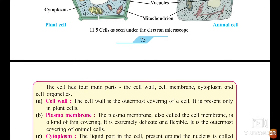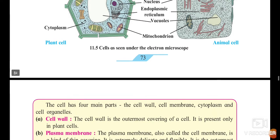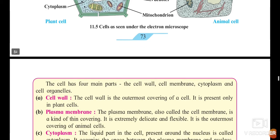Cell consists of four main parts. First one is the cell wall, which is present in plant cell. Cell membrane is present in both the cells. Cytoplasm is present only in plant cell, and cell organelles — meaning cell organs — are present in both the cells.